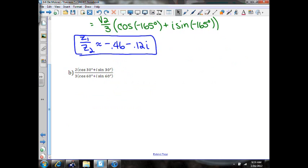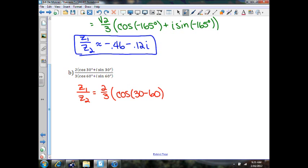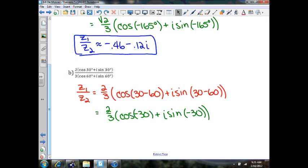For example B, we're going to do pretty much the same thing. Z1 divided by Z2, that'll be 2 divided by 3 times the cosine of 30 minus 60 plus i sine of 30 minus 60. That will simplify to 2 thirds times the cosine of negative 30 degrees plus i sine of negative 30 degrees.